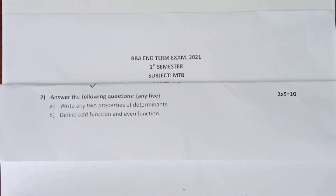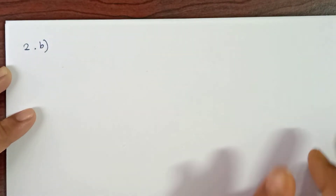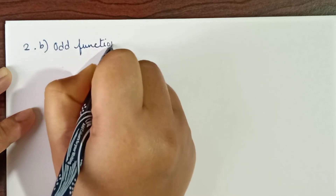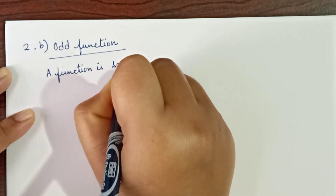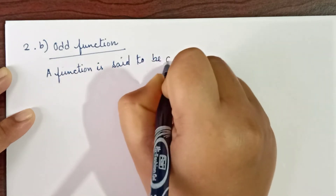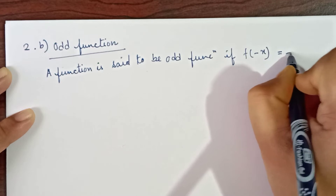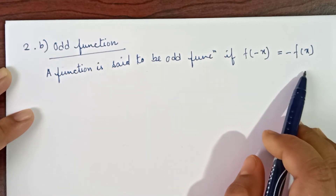Now move on to the next question: define odd function and even function. A function is said to be an odd function if f(−x) = −f(x). That means if a function satisfies this condition, then it is called an odd function.